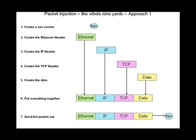The first step is creation of the raw socket itself. This is done via a socket call to PF_PACKET, SOCK_RAW, and then the protocol you want to add. In this approach, we first create the Ethernet header, then the IP header, then the TCP header, and finally the data. Once all these individual headers and data have been created, we put all of them together — Ethernet header, then IP header, then TCP header, then the data — which is the sequence in which a packet is formed. After this is done, we send out the packet through the raw socket we created.